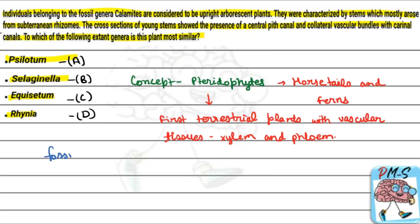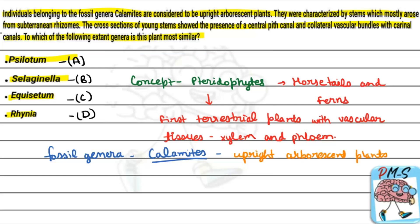We have the fossil genera Calamites. The characteristics of Calamites: these were upright arborescent plants. Arborescent plants are those described as trees — they have a woody stem and single trunk.